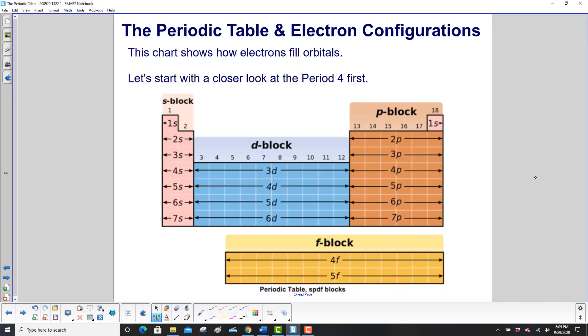This chart shows how electrons fill orbitals. Let's start with a closer look at period 4 first.